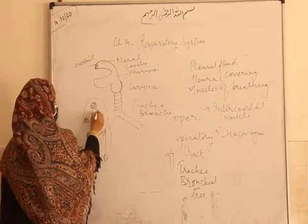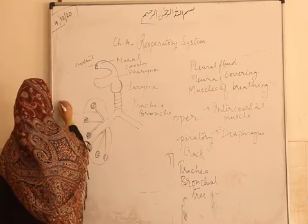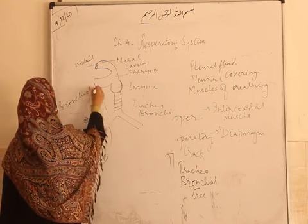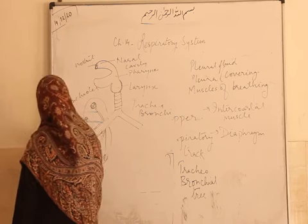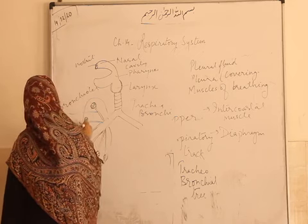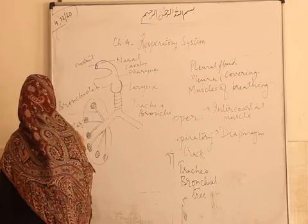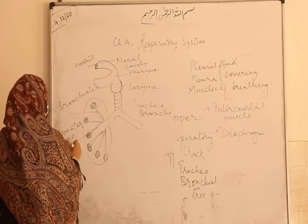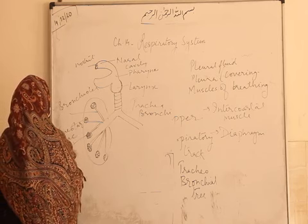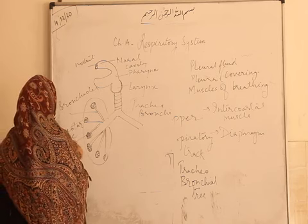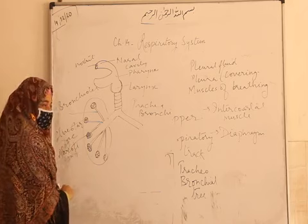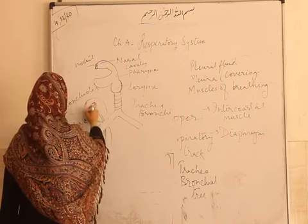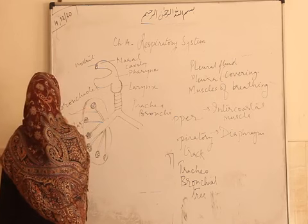Bronchioles. Then alveolar sac. And inside that, alveoli. This is pleural membrane — it's a double membrane.